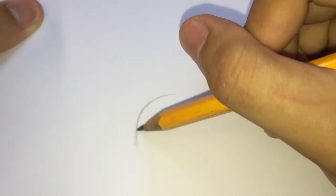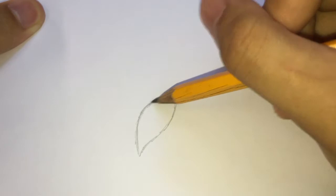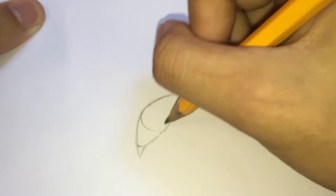First thing that I do is draw the upper lash line and the lower lash line of the eye. Then proceed to the inner corner, the iris, and the pupil.